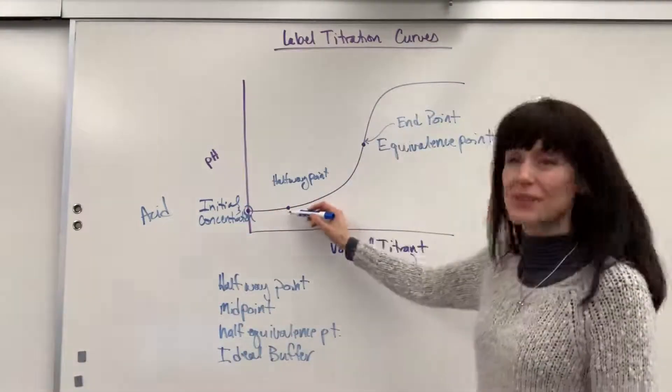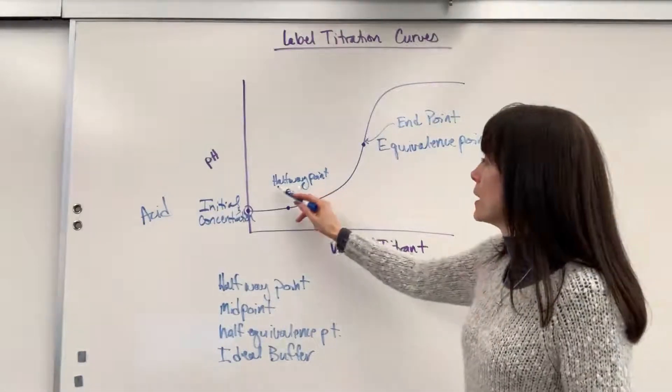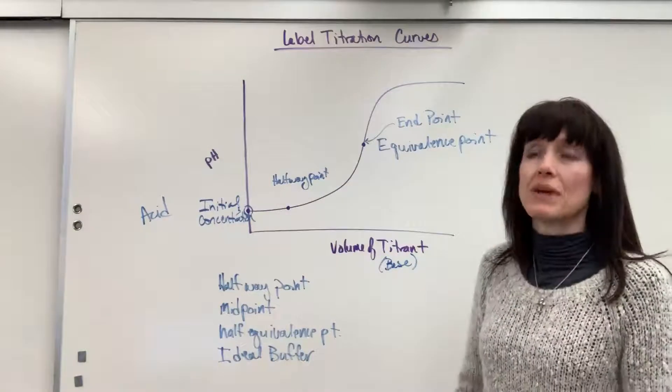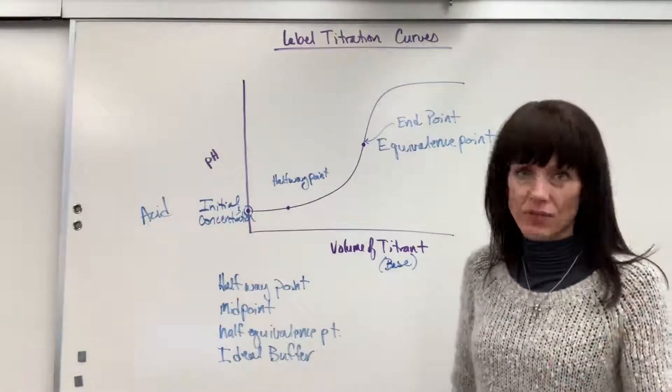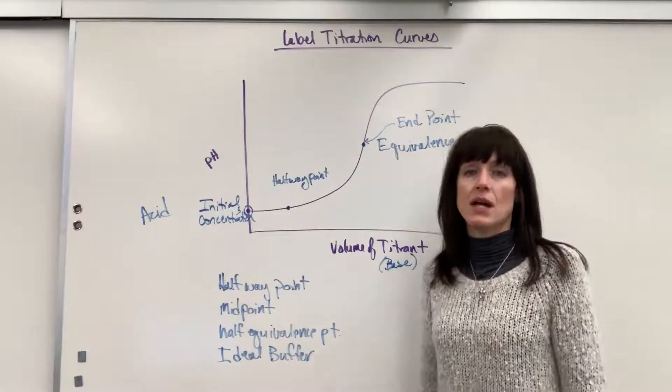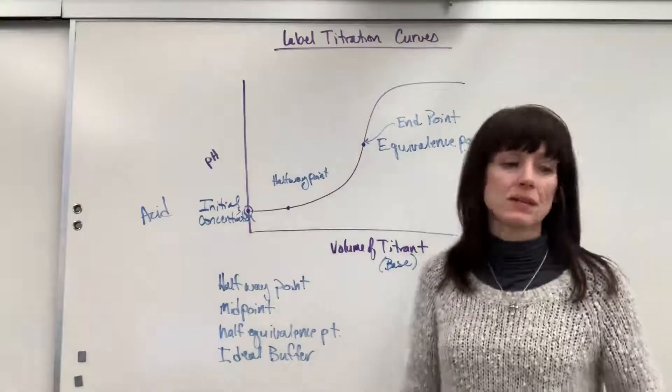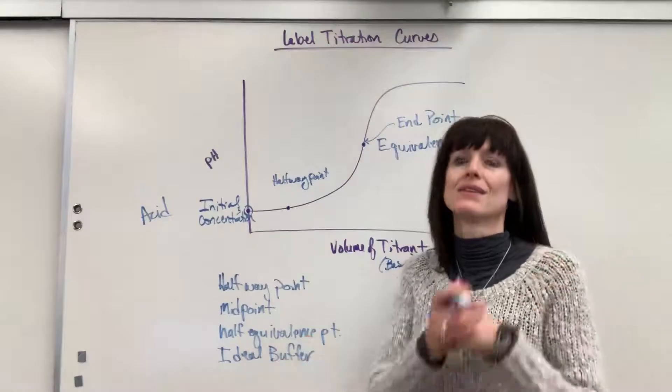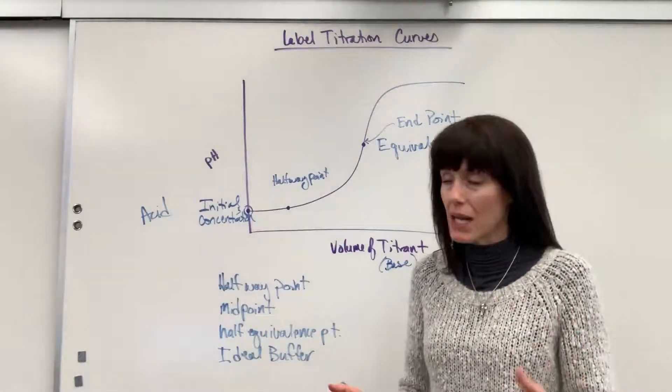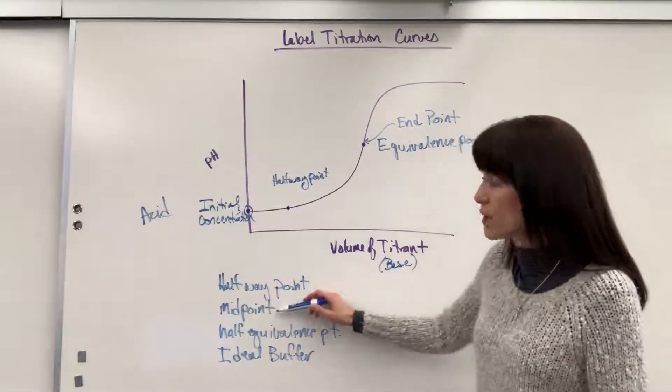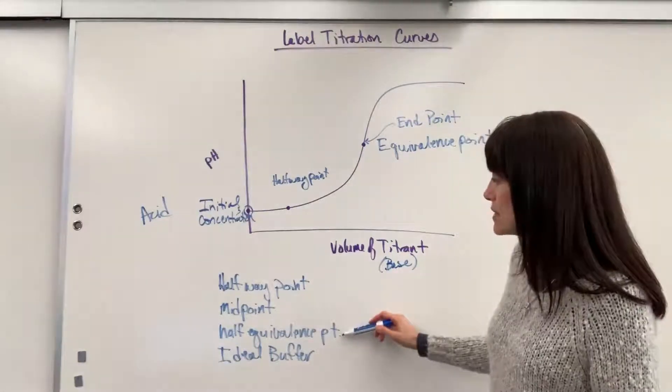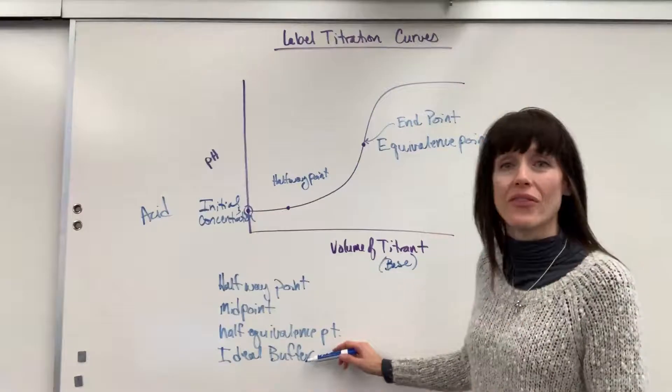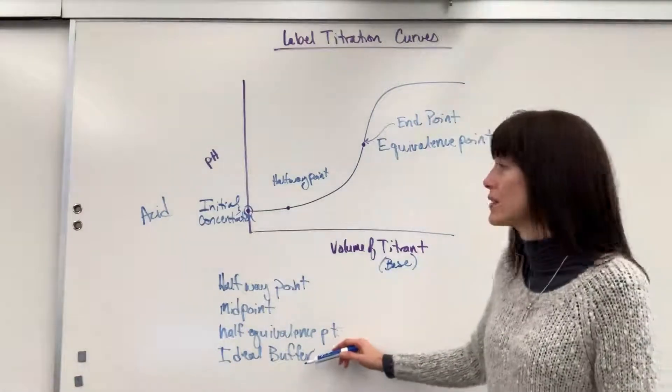Now this point, really, really special. So in AP, it's going to be called the halfway point, but I've seen it named several different things. So I've made a list down here. It depends on the classroom you are in. It depends on the textbook that you're using. Here are synonymous. These are the same, same meaning. Halfway point can also be called the midpoint. I've seen it written as half equivalence point. And I've also seen it called the ideal buffer. All the same thing.